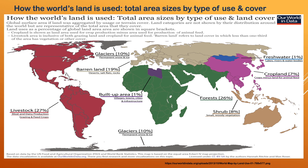The world's land is used in different forms: livestock, glaciers, barren land, built-up areas, forest, shrubs, cropland and freshwater.